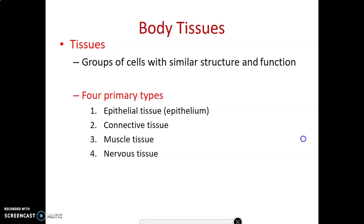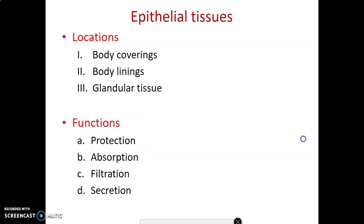What is a tissue? A tissue is a group of cells that subserve similar function, and usually they have similar structures, so together they subserve a common function. Where do we find epithelial tissue? In the body coverings, body linings, and glandular tissue.